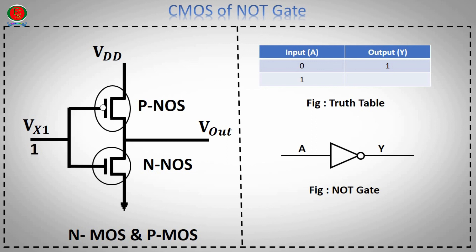NOT gate input A equals 1, NOT gate output Y equals 0.